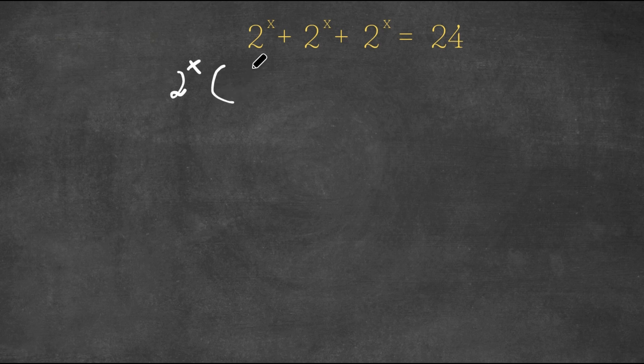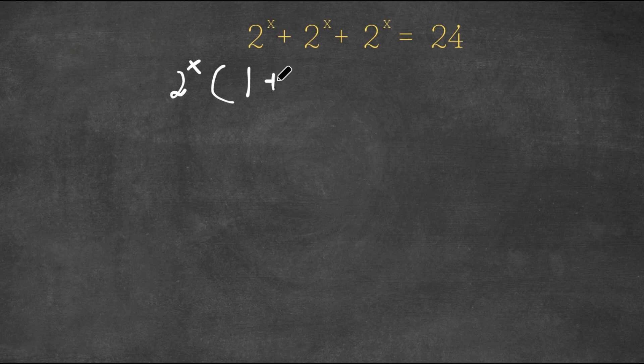So now I have 2 to the power of x times 2 to the power of x divided by 2 to the power of x is 1 plus, again, same thing, 1 and plus 1. This is equal to 24.